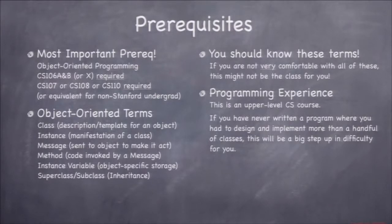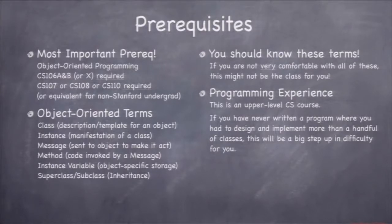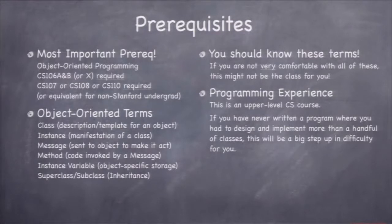If you've done a summer internship or some programming, that's a substitute for CS107, 108, or 110. Or if you've done a more advanced CS class, that's fine too. Most importantly, you've got to be comfortable with object-oriented programming — terms like message, instance variable, superclass, and subclass. If you don't know those terms like the back of your hand, it's going to be hard, because iOS 7 is completely object-oriented. The whole structure of its design is object-oriented.